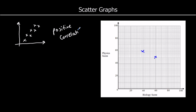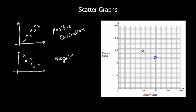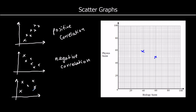If as one of our things goes up, the other one goes down, we'll call that a negative correlation. Or we could have no correlation at all — so there could be no relationship between the two variables, between the two things we're measuring. So we could have no correlation.